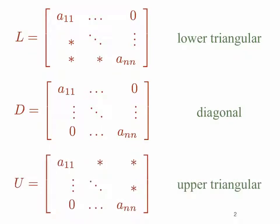An upper triangular matrix is just the opposite of a lower triangular matrix. It has non-zero entries possibly on the diagonal, and then non-zero entries above the diagonal, while all entries below the diagonal are zeros. It should be noted that a diagonal matrix is both lower and upper triangular, and you can work out for yourself why that is the case.